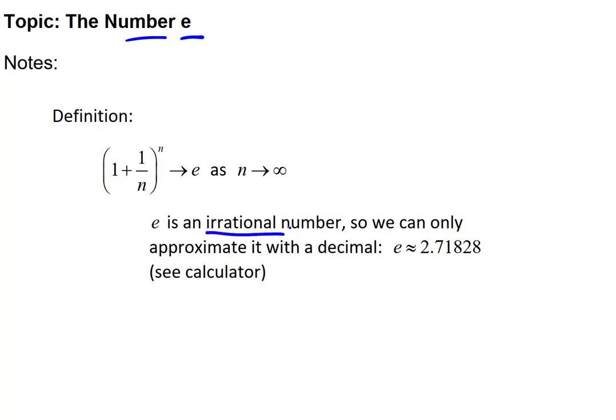e is an irrational number, kind of like the number pi or square root of 2, so we can only approximate it with a decimal. Now this number, or at least an approximation of it, is programmed into a TI graphing calculator, so that'll be useful for us. It's approximately 2.71828.